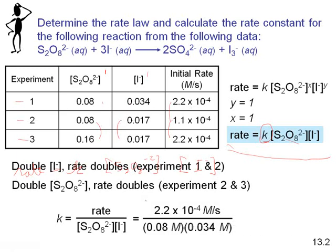To find k, rearrange the equation: k = rate / ([S₂O₈²⁻][I⁻]). Using the first experiment — rate = 2.2×10⁻⁴, [S₂O₈²⁻] = 0.08 M, [I⁻] = 0.034 M — I can plug those in. One important note on units: the two molarity terms in the denominator cancel one molarity in the numerator, leaving units of M⁻¹s⁻¹, which is molar over seconds inverted. That gives a rate constant of approximately 0.08 M⁻¹s⁻¹.